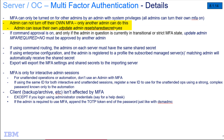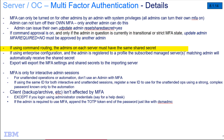You cannot turn off multi-factor authentication for yourself — another administrator must do that for you. You can, however, issue an update admin reset shared secret for yourself. If command approval is on and the administrator being updated is currently in transitional or strict MFA state, then the update admin MFA required equals no must be approved by another administrator. If you're using command routing, the administrators on each server must have the same shared secret, which is when you'd use the shared secret equals command.